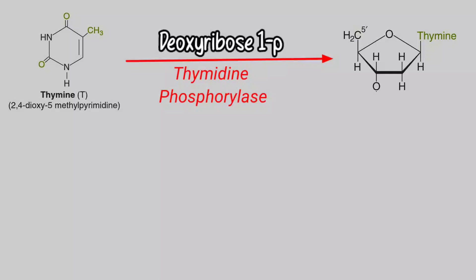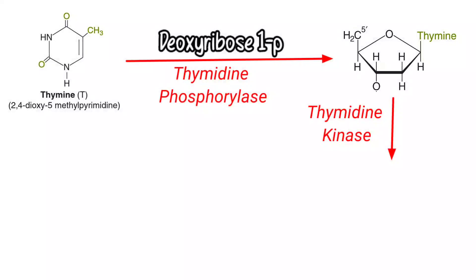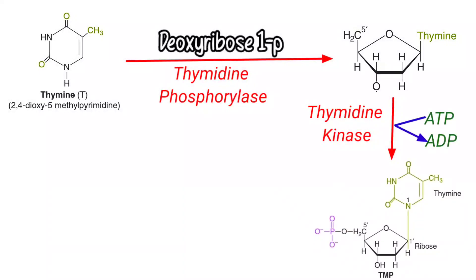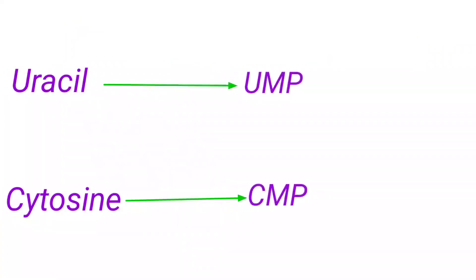This thymidine, in the next step catalyzed by thymidine kinase, receives a phosphate transferred from ATP, leading to the formation of thymidine monophosphate (TMP). Similarly, other pyrimidine nucleotides like UTP and CTP are formed from the free pyrimidine bases.